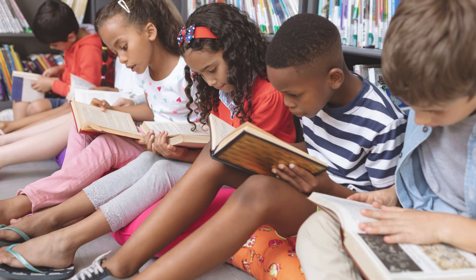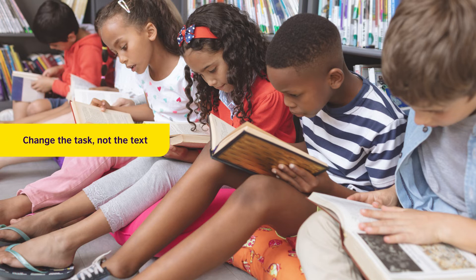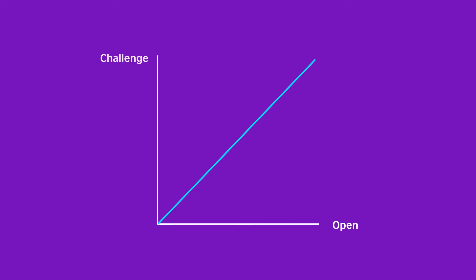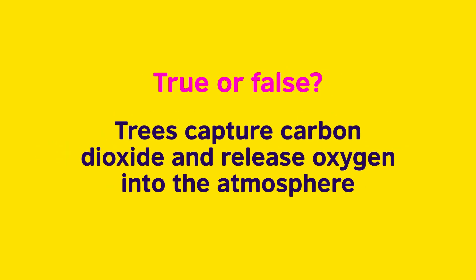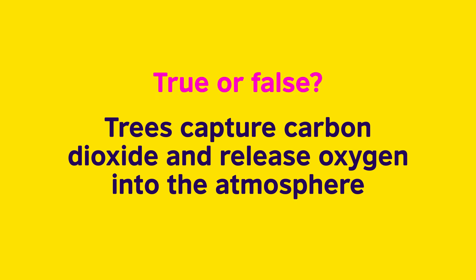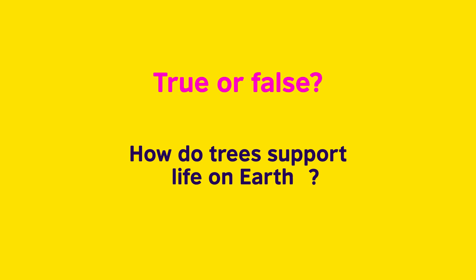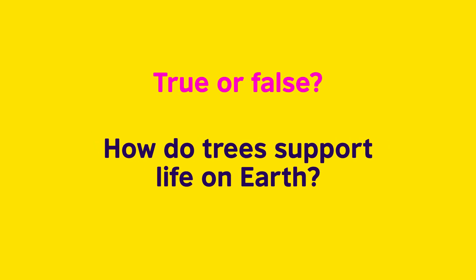The second point to think about is the reading task. For example, can we use the same text with all the students but have alternative sets of questions? A useful principle here is that the more open a question is, generally the more challenging it is. So, for example, you can make true or false questions more challenging for some stronger students by asking them to explain the reasons for their choice, or by changing the questions into more open-ended questions.